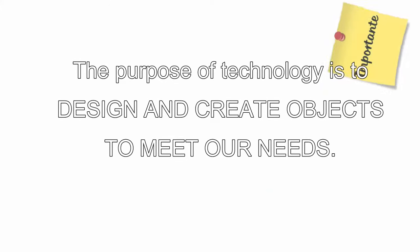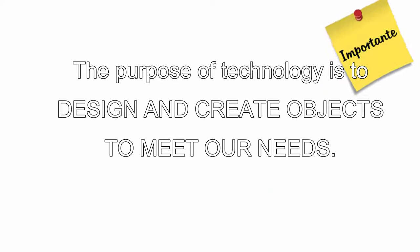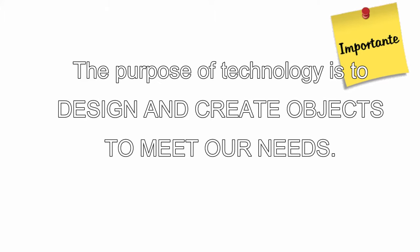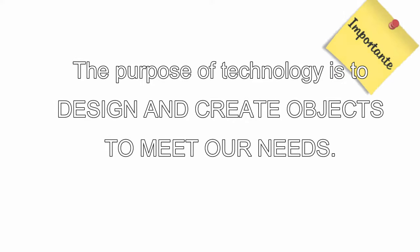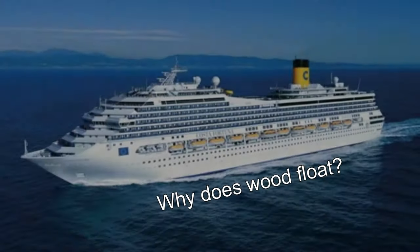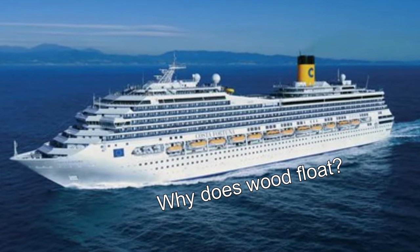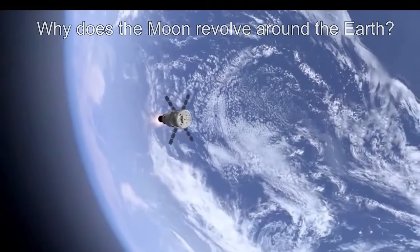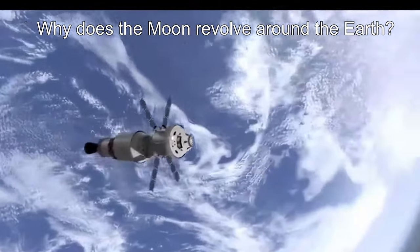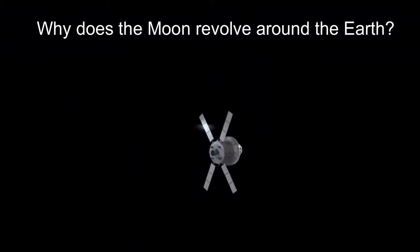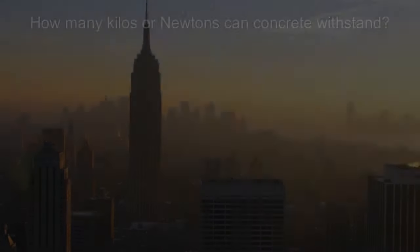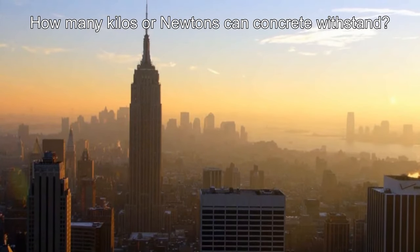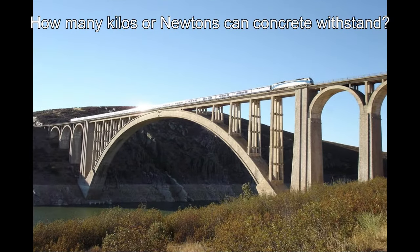On the other hand, the goal of technology — which is to say, the goal of architects and engineers — is to solve problems. The purpose of technology is to design and create objects to meet our needs. Its purpose is not to explain anything; its purpose is to create useful objects. For example, an engineer might use the scientific knowledge that explains why wood floats in order to build a ship. They could use scientific knowledge regarding why the moon revolves around the earth to help create a satellite that makes it possible to communicate by phone with someone on the other side of the world. Or, they might use data that measures the strength of concrete in order to design a building or a bridge.